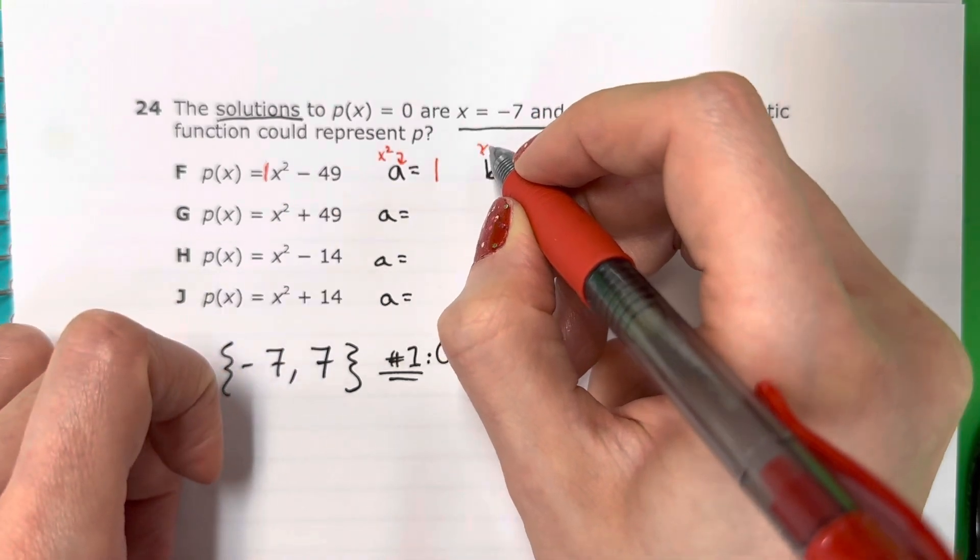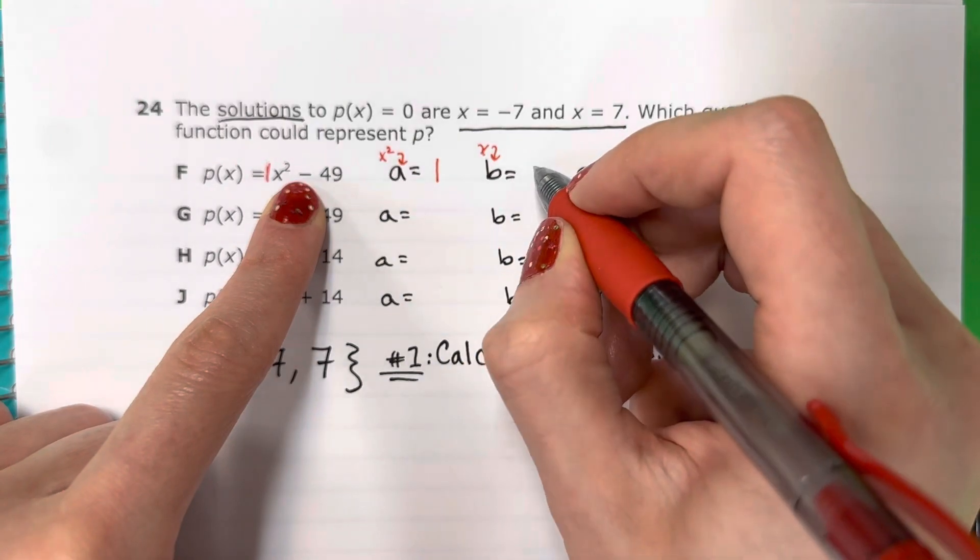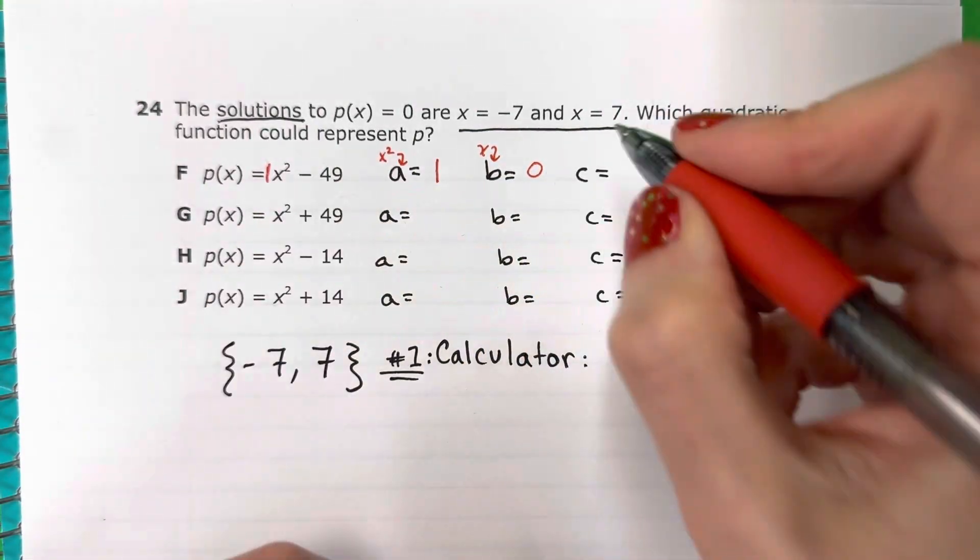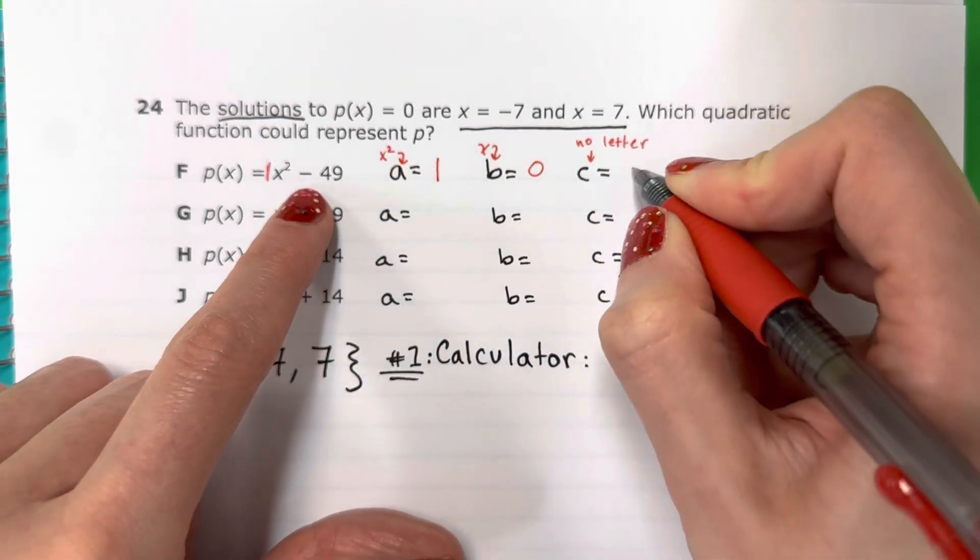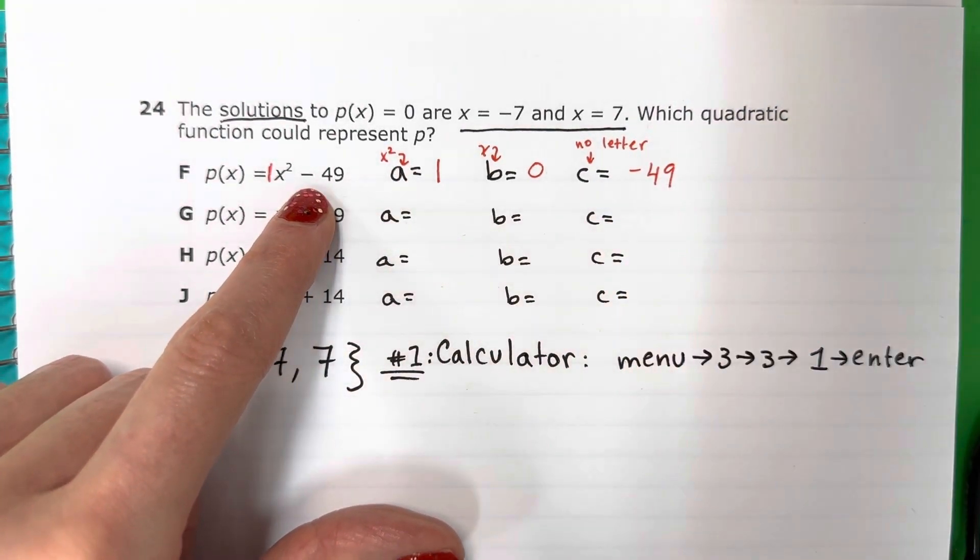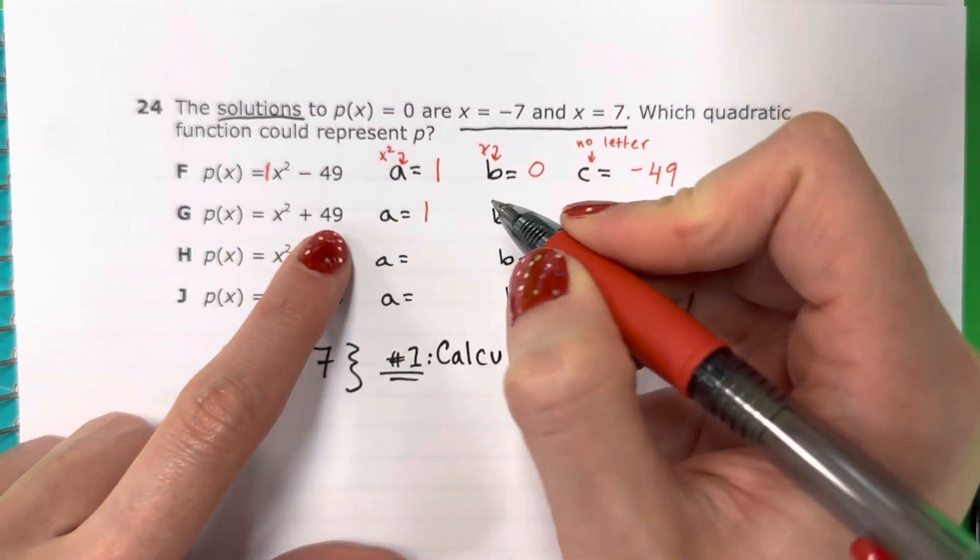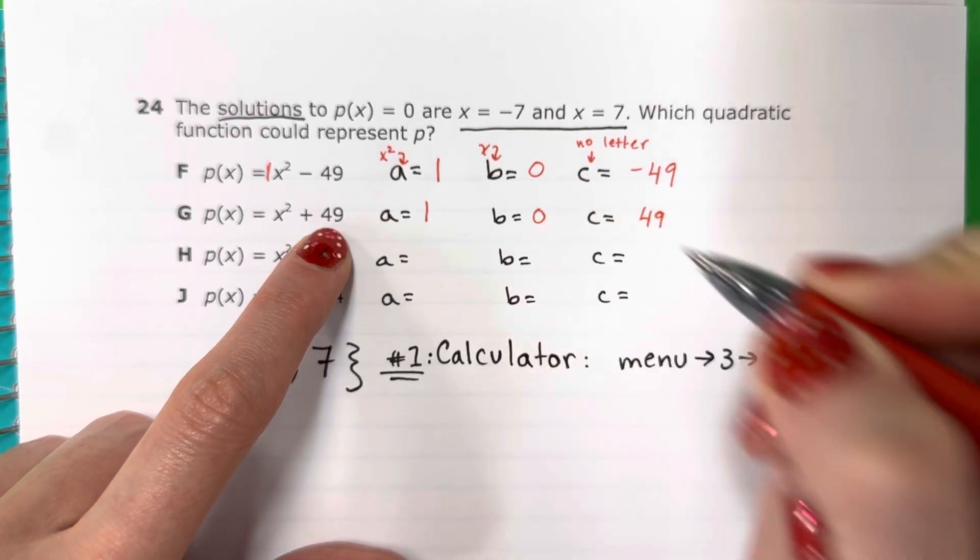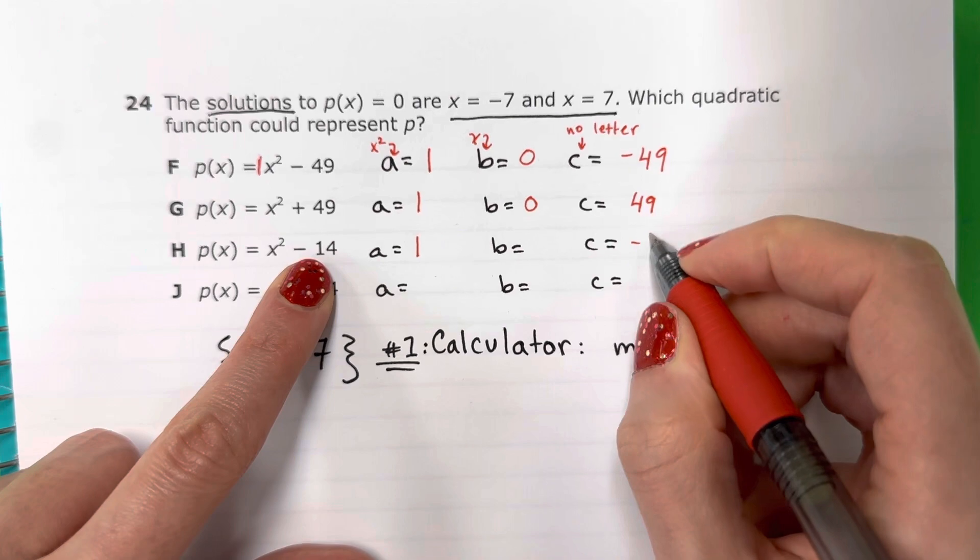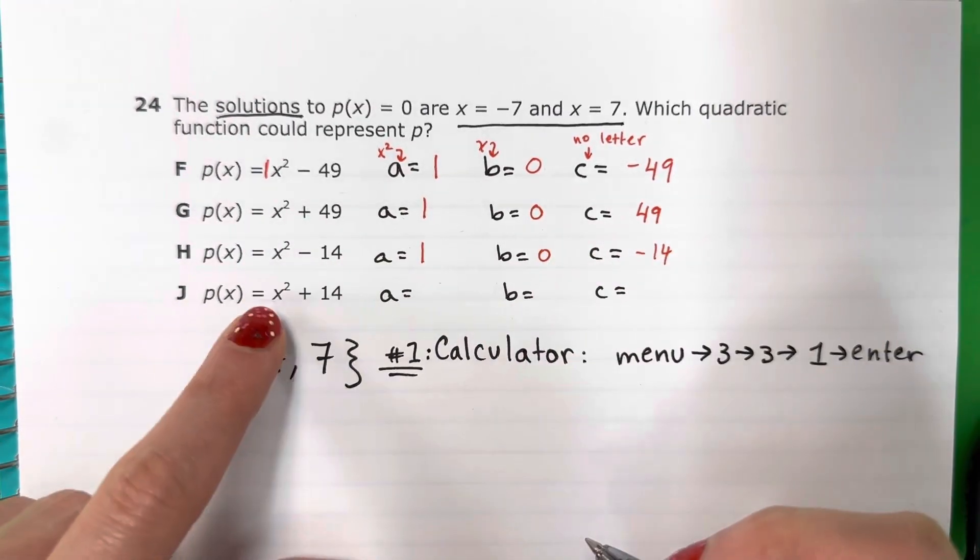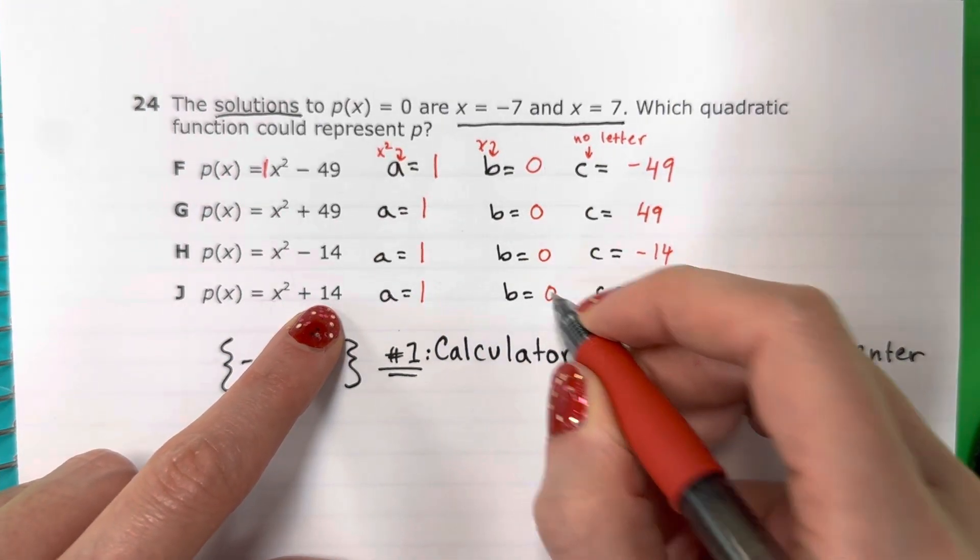B is the number with x, no exponent. I don't have that, so that's going to be 0. And C does not have a letter, so that would be negative 49. Let's do them all. For F: A is 1, B is 0, C is -49. For H: A is 1, B is 0, C is -14. For J: A is 1, B is 0, C is 14.